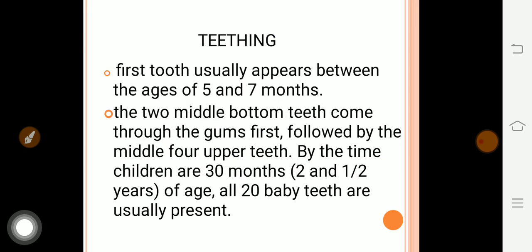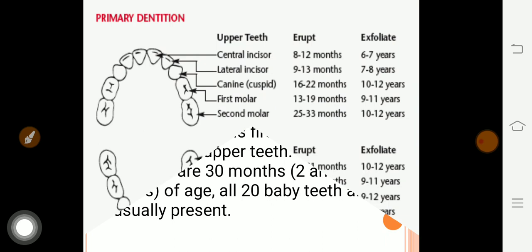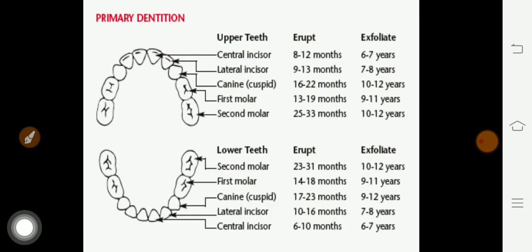Regarding teething: the child's first teeth start coming in between five to seven months. Different teeth erupt and exfoliate at different age groups. Eruption means when the tooth first comes in, and exfoliation means after the first (milk) teeth fall out and the second set of teeth comes in.